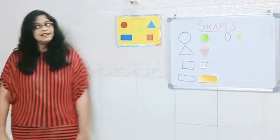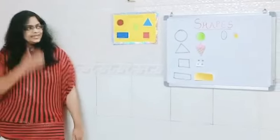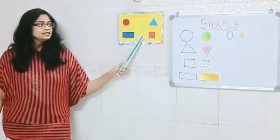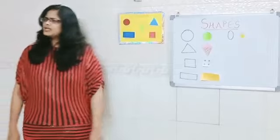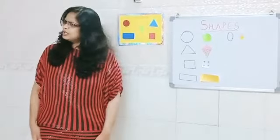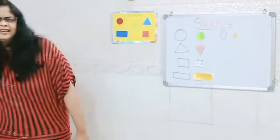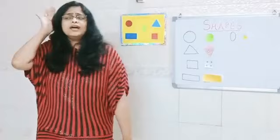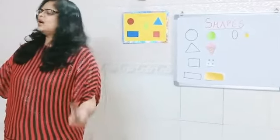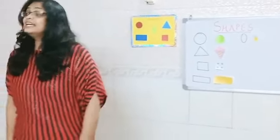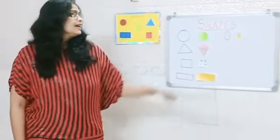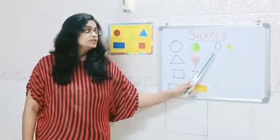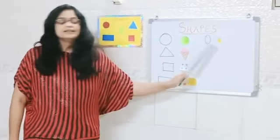So let's see the last one for the day. That's an oval. What's the best example of an oval? Everyone has seen an egg? Yes. That's an egg. An oval is like an egg.